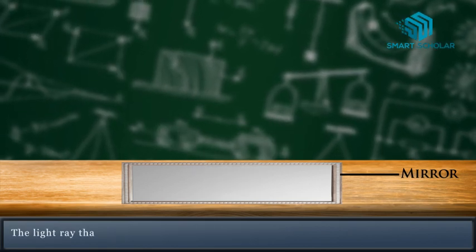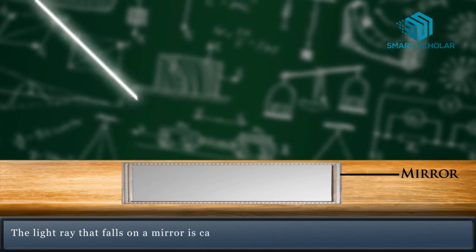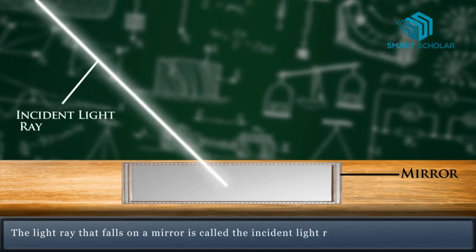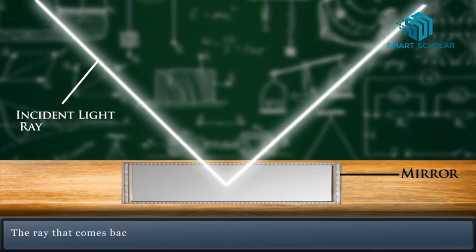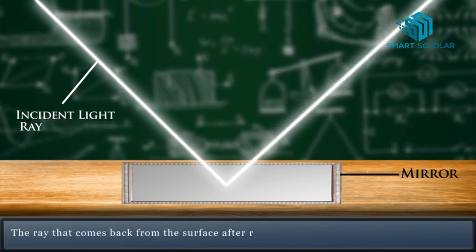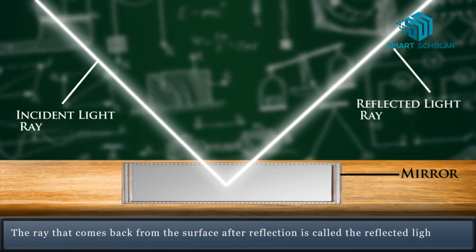The light ray that falls on a mirror is called the incident light ray. The ray that comes back from the surface after reflection is called the reflected light ray.